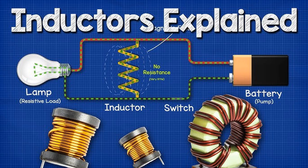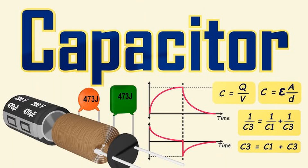In a resistor — a component specifically designed to provide resistance — resistance is intentionally introduced into the circuit to limit current flow. In a direct current, DC, circuit, resistance remains constant and is independent of frequency. However, in an alternating current, AC, circuit, resistance still exists, but its effects may be influenced by frequency-dependent phenomena like skin effect and proximity effect, especially at high frequencies. Resistance can be calculated using Ohm's law, which states that the voltage, V, across a resistor is directly proportional to the current, I, passing through it, and the constant of proportionality is the resistance.